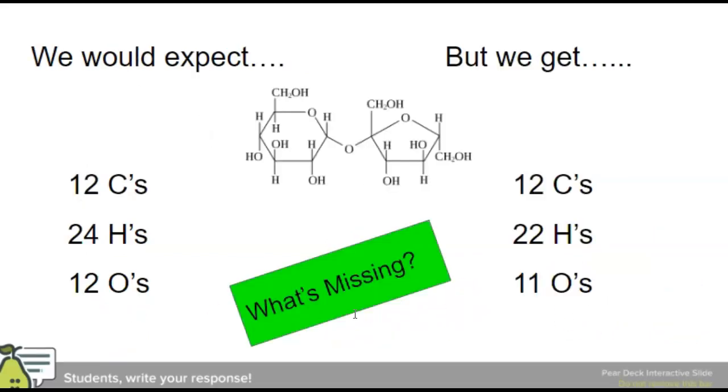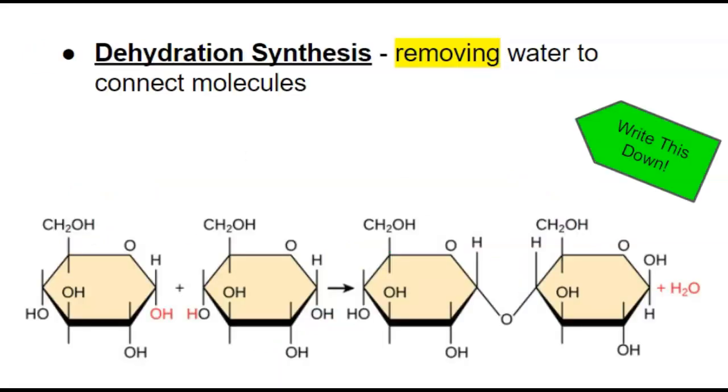Here's the problem though. This is what we would expect: twelve, twenty-four, and twelve. We end up getting twelve, twenty-two, and eleven. What's missing? Well, instead of twenty-four H's, we had twenty-two, so two H's, and we're missing one O. We're missing the water, which tells us that in order to connect molecules, we've got to remove water.